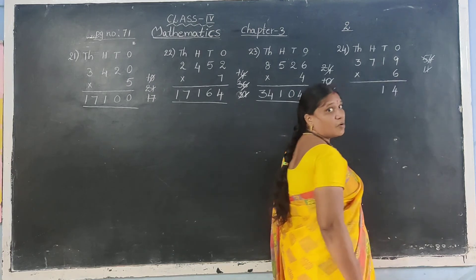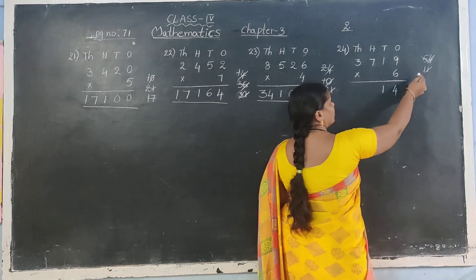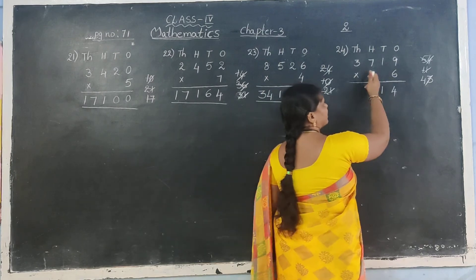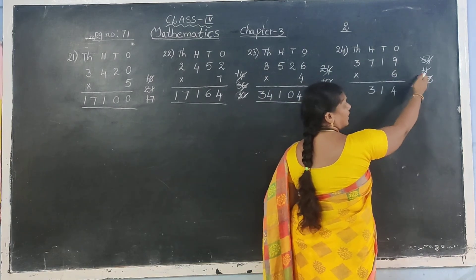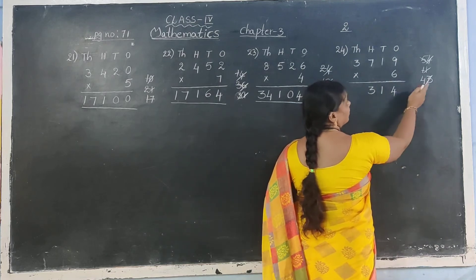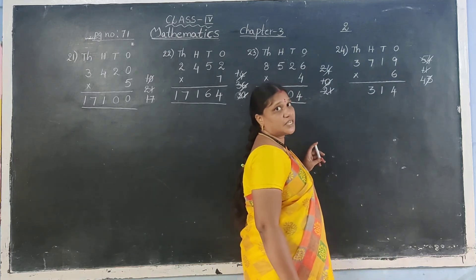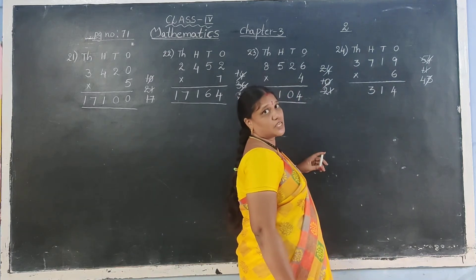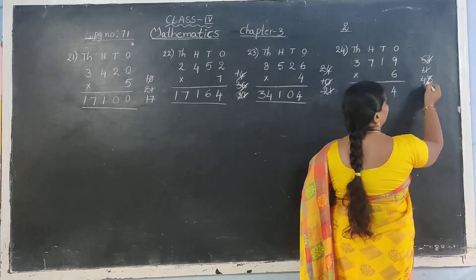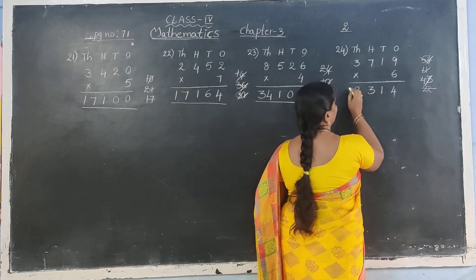6 sevens are 42. Carry number 1 is there: 42 plus 1 is 43. Write 3 in answer, carry 4. Next: 6 threes are 18. Carry number 4: 18 plus 4 is 22. Write 22 directly in answer. Why directly? Next digit is not there.